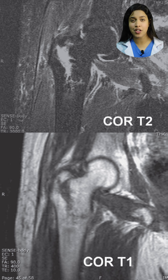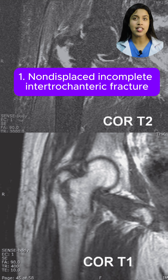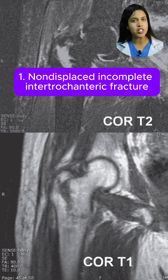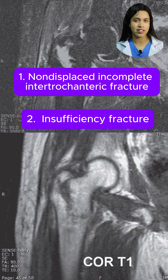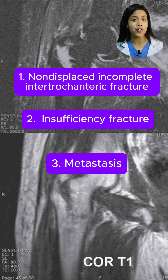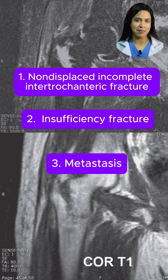Now let's discuss the differential diagnosis for these findings. The most likely diagnosis is a non-displaced incomplete intertrochanteric fracture. This conclusion is based on the patient's presentation and the specific MRI signal abnormalities. An insufficiency fracture is less likely as the intertrochanteric location is not typical for this type of fracture. Metastasis is also unlikely due to the lack of lobular mass-like morphology.